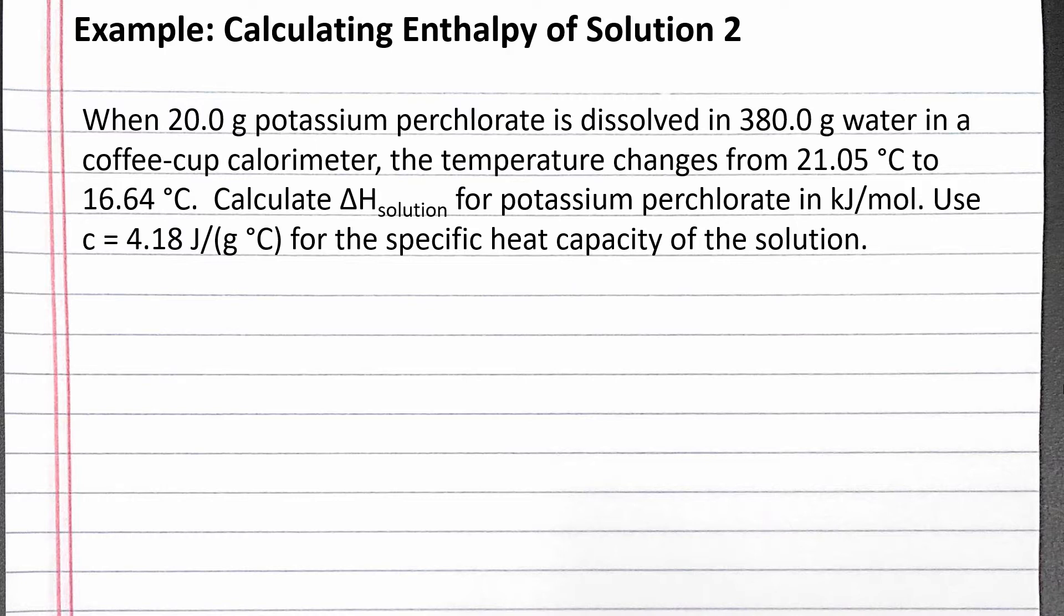the temperature changes from 21.05 degrees Celsius to 16.64 degrees Celsius. Calculate the enthalpy of solution for potassium perchlorate in kilojoules per mole. Use c = 4.18 joules per gram degrees Celsius for the specific heat capacity of the solution.